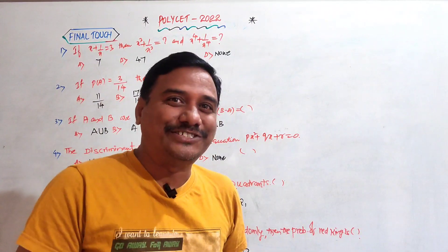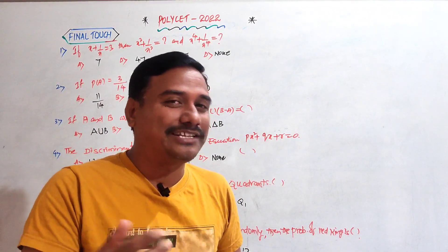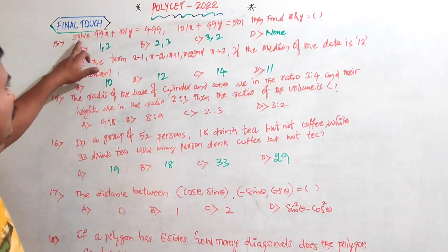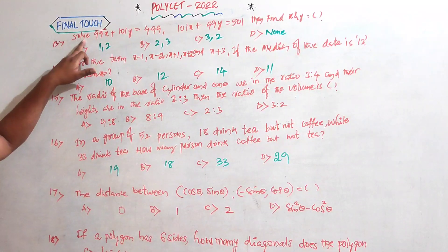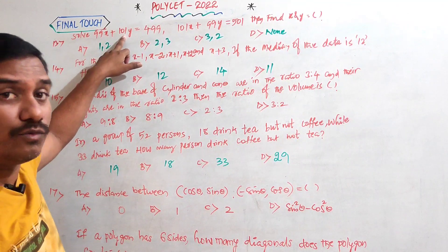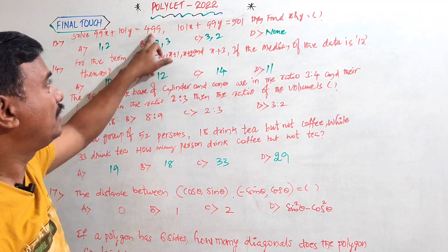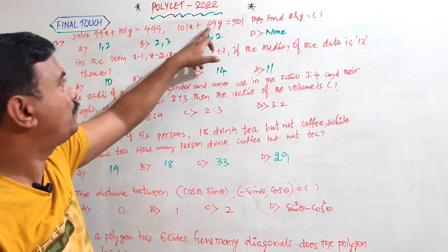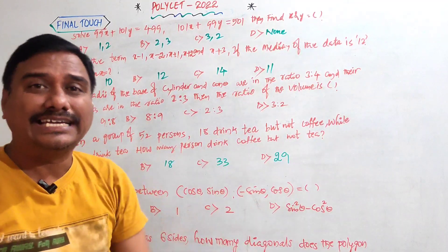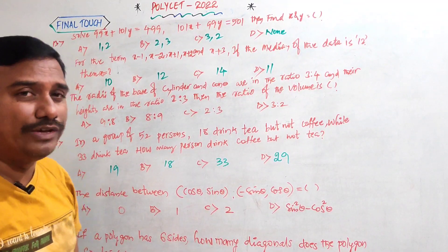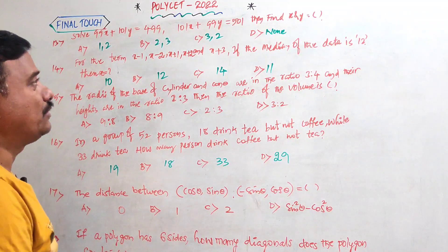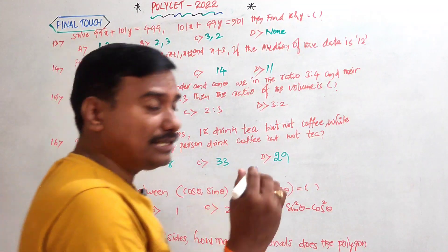Hi friends, this is your Srinivas, welcome back to our channel. Question number 14: solve 99x + 101y = 499 and 101x + 99y = 591, then find the value of x and y. We have equations in two variables; the general method is elimination.